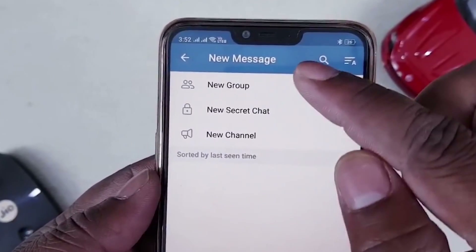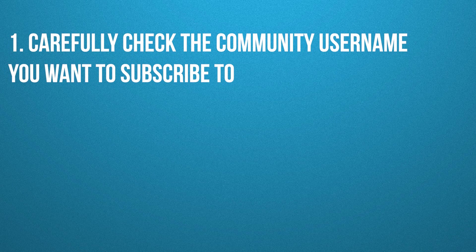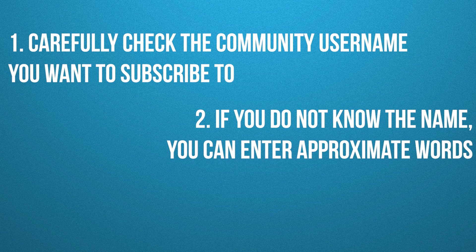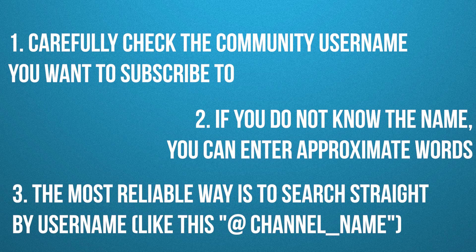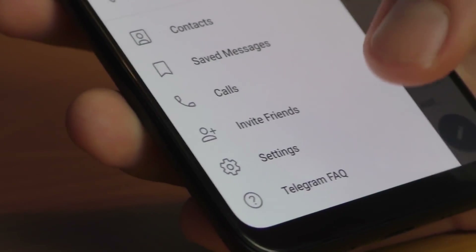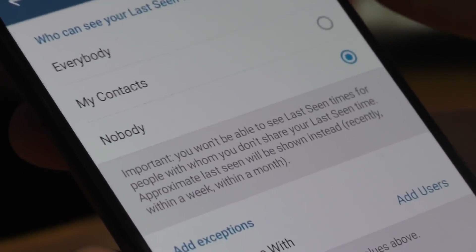Here are some tips for using the search box on Telegram to help you find the channel you're looking for. Carefully check the community username you want to subscribe to — it's particularly relevant for channels related to cryptocurrency, where the difference may be in just one letter. If you don't know the name, you can enter approximate words, though you're less likely to find what you need. The most reliable way is to search straight by username. It's still unknown how accurate this search is, but a lot of users really want the developers to upgrade it, and I do hope that happens sooner or later.